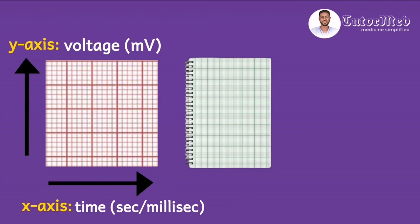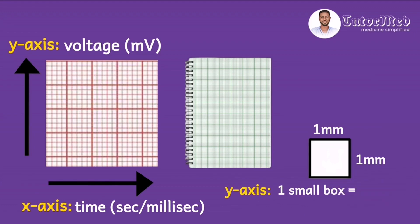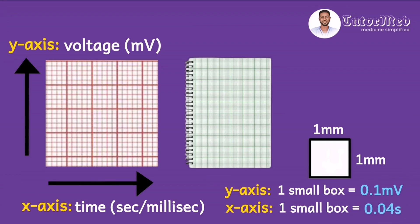Notice that just like our graph book, the strip has big boxes, and each of these big boxes has five small boxes — five small boxes make up one big box. Let's focus on the small box, which is the smallest dimensional unit of the strip. The small box has a horizontal dimension of one millimeter and a vertical dimension of one millimeter. On the y-axis, one millimeter equals 0.1 millivolts, and on the x-axis, one small box equals 0.04 seconds or 40 milliseconds.